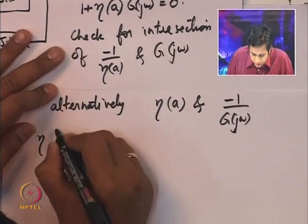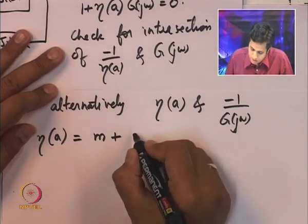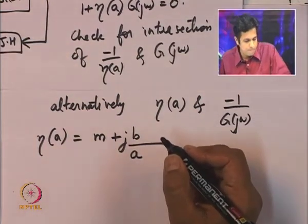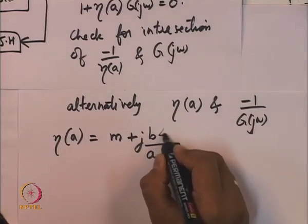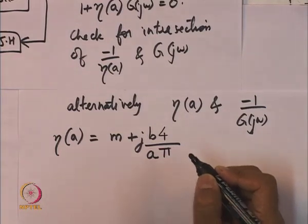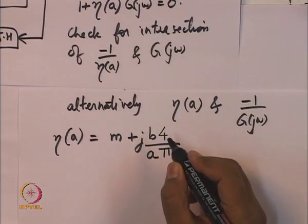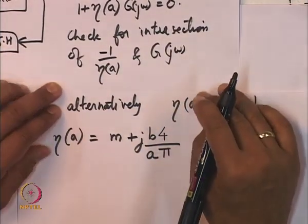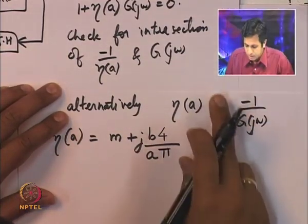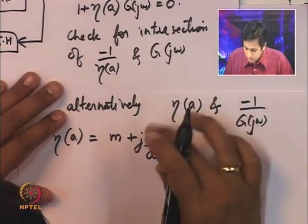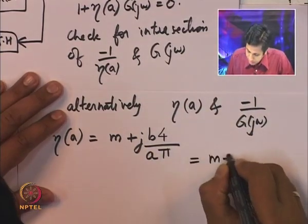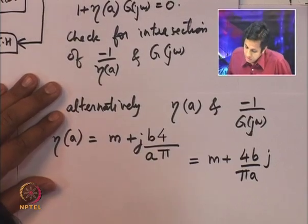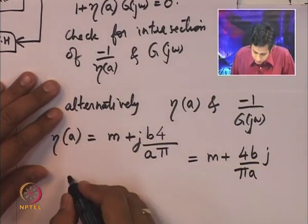For the jump hysteresis, η(A) = m + j·(4b/πA). The imaginary part was obtained by noting that the jump is in phase with cos(ωt), which is the derivative of sin(ωt). So η(A) = m + j·(4b/πA).